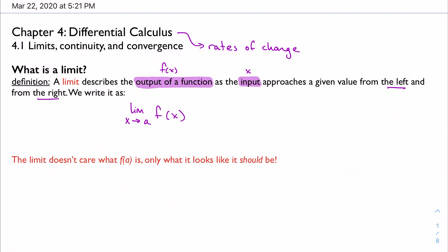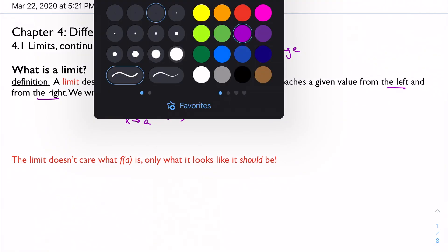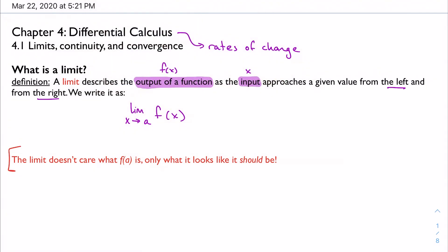The main rule here for limits is that the limit does not care what the actual function value is. It only cares about what it looks like it should be. The limit kind of stops short before the function value to say it looks like we're going to get there, so we're just going to assume that it's going to get there. You'll see this with a graphical example later on.